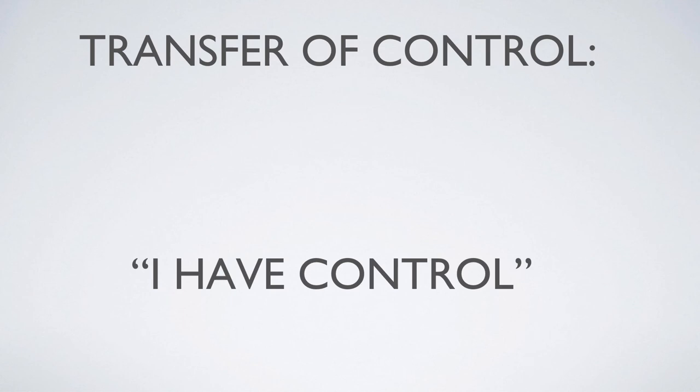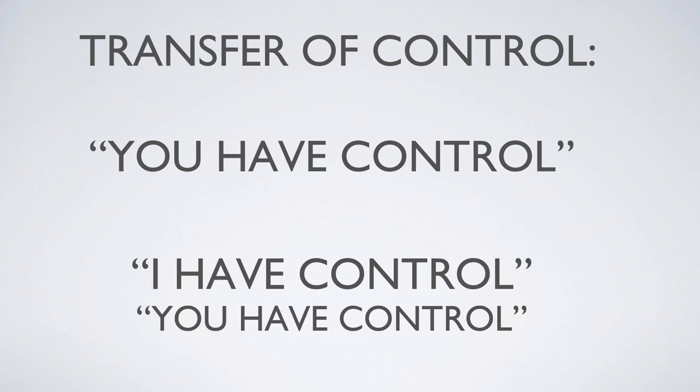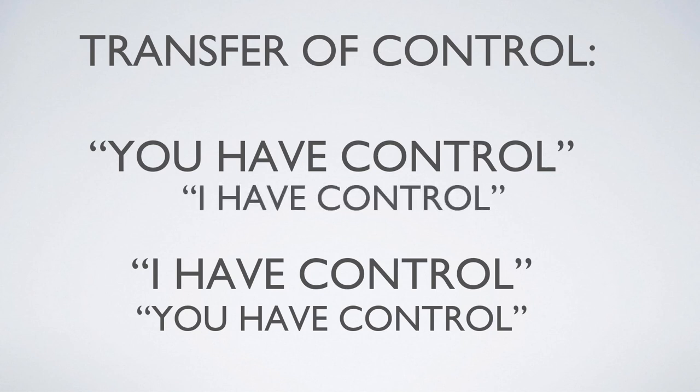Another important safety measure during flight training is defining who has control of the aircraft at any specific point in time. If I'm going to take control, I will say 'I have control' — you take your hands and feet off the controls and respond with 'you have control,' meaning you've given me full control. Conversely, if I want to give you control, I'll say 'you have control' — you put your hands and feet on the controls and respond with 'I have control,' confirming you've understood.